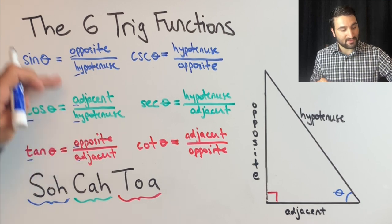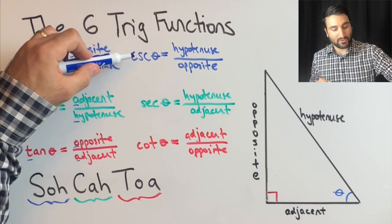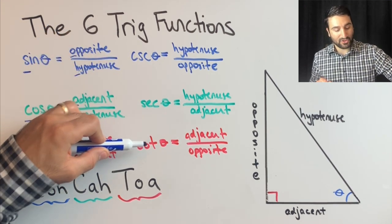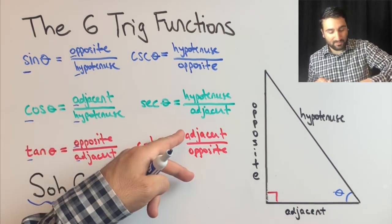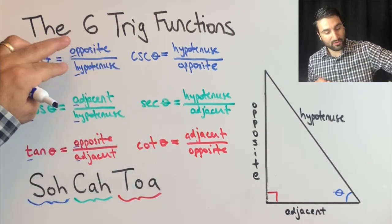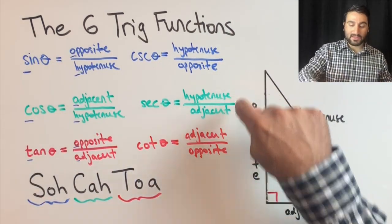And then their reciprocal counterparts will be the reciprocal of those. So if you were able to write these three down and you produce cosecant, secant, cotangent, you would just flip these to produce these three.